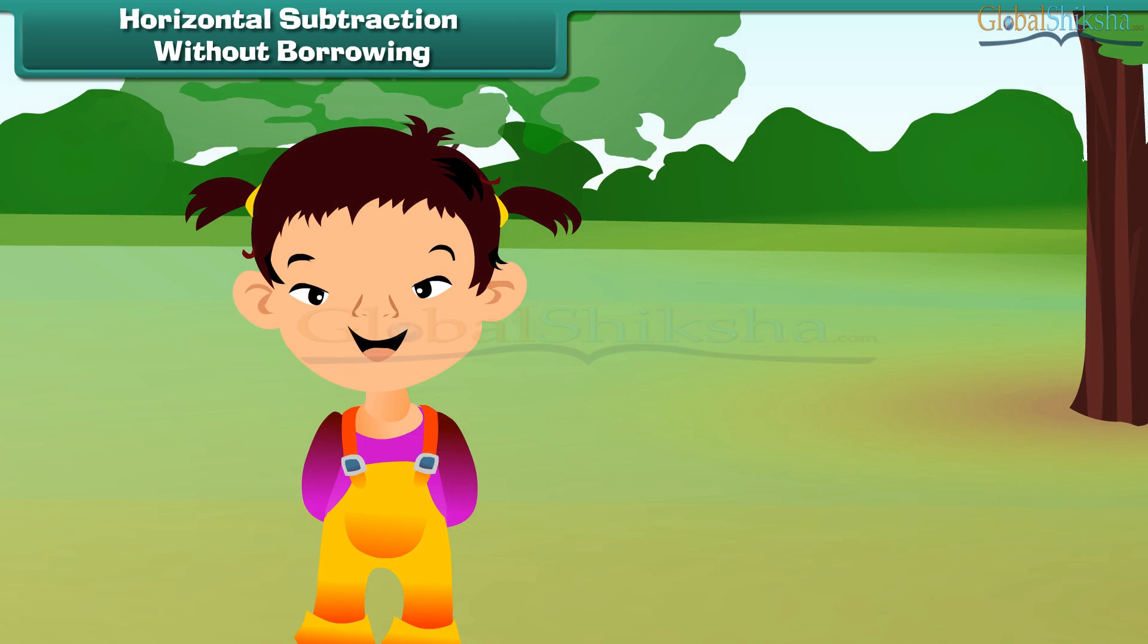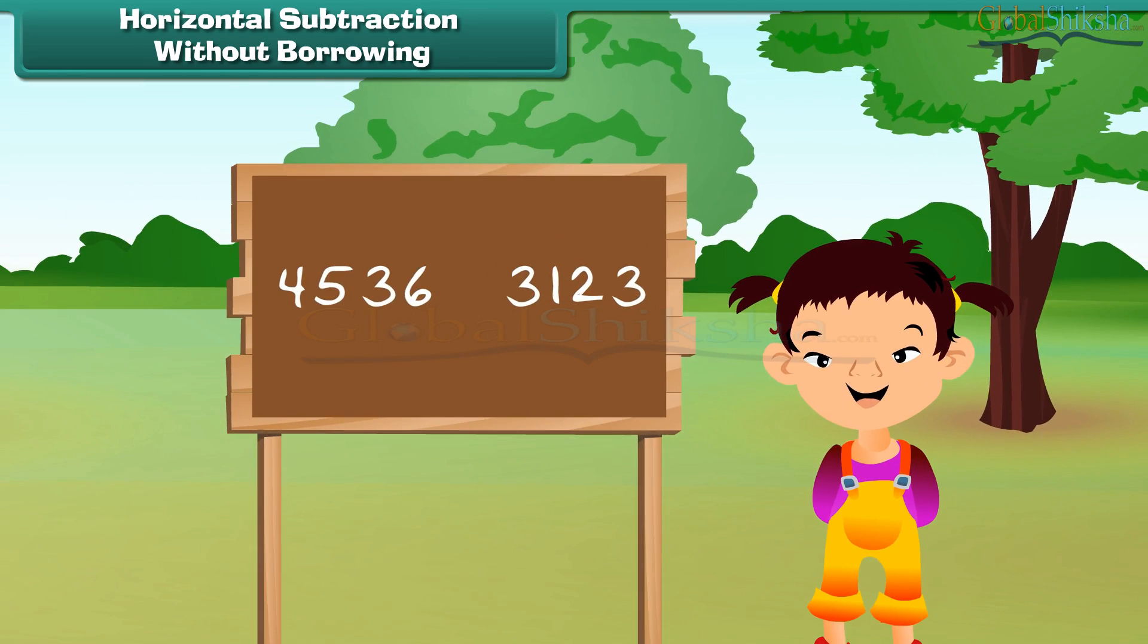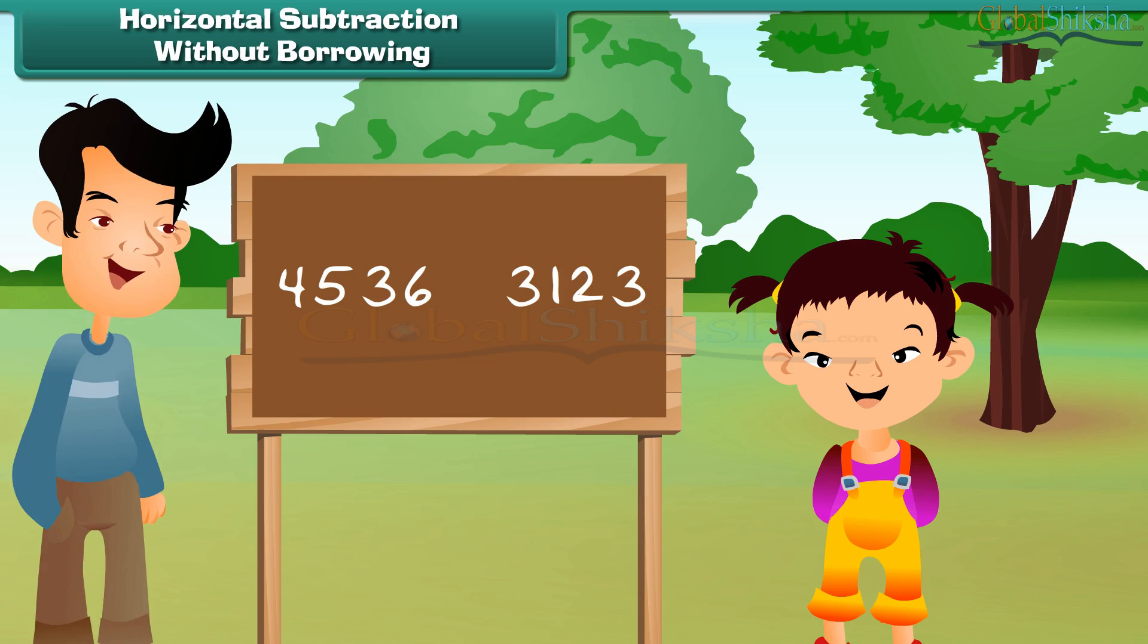Then add the numbers at 100's place. We have one number carried on to 1000's place. Add 1000's to make the final answer. So, the answer to the problem is 9094.